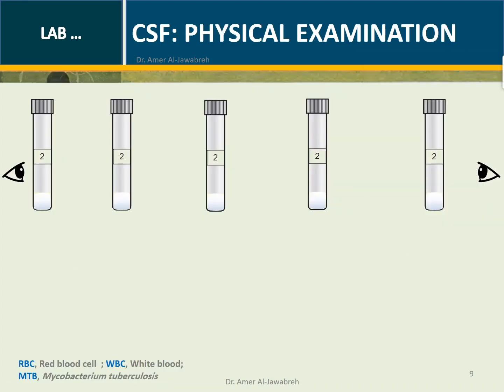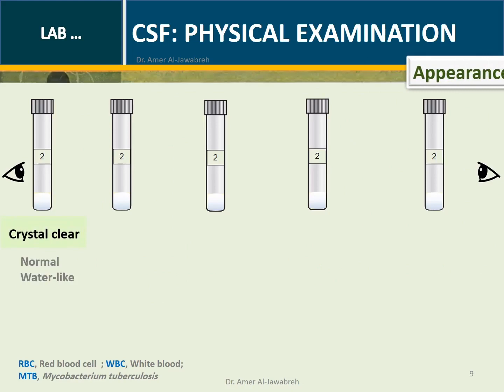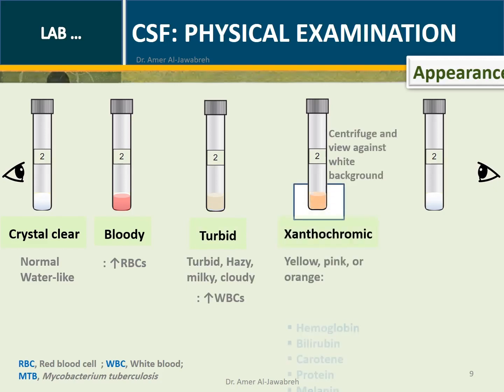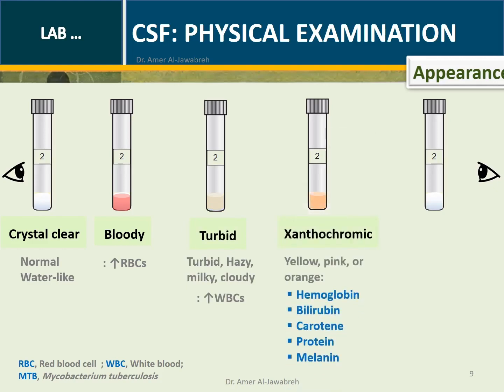Physical Examination of CSF — Appearance: Normally, CSF is crystal clear. It may appear bloody due to increased RBCs, or turbid due to increased white blood cells, or xanthochromic (yellow, pink, or orange) due to hemoglobin, bilirubin, carotene, protein, or melanin. Pellicle formation may occur due to tubercular meningitis.